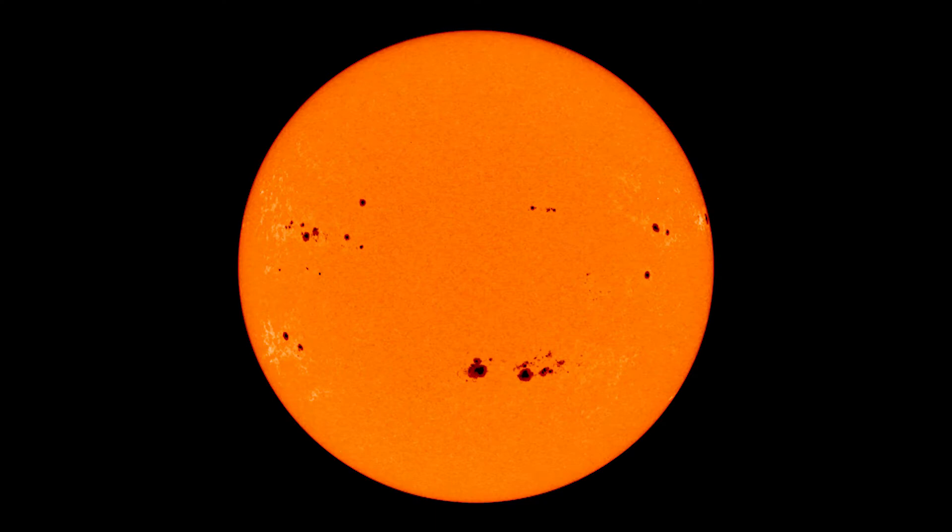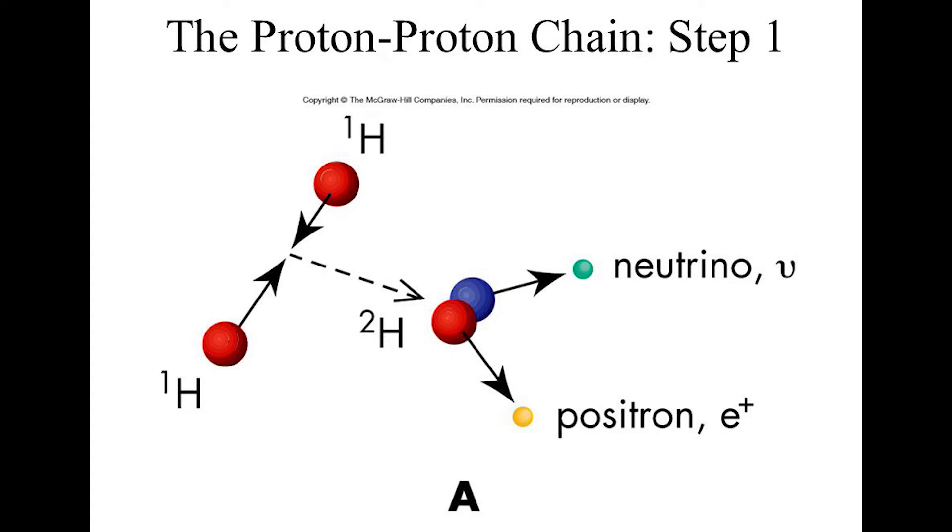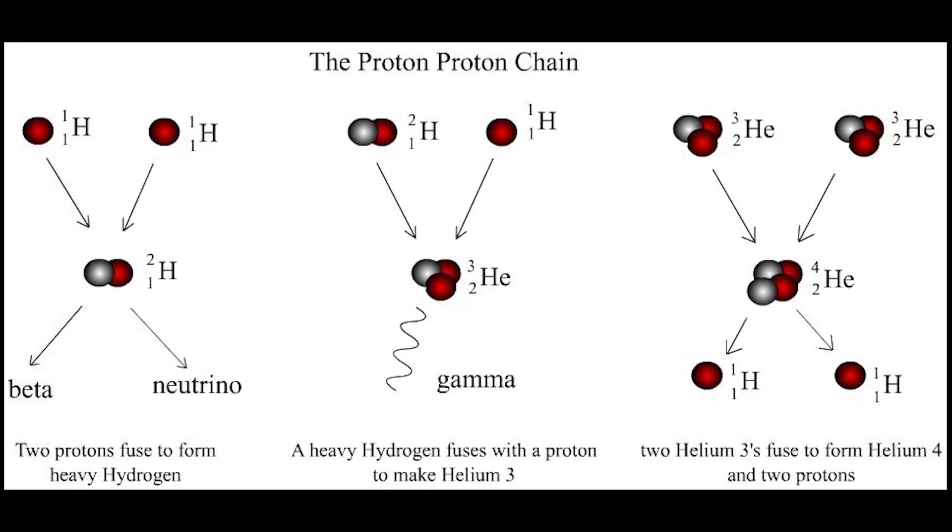Then the contraction ceases and the star turns on and becomes a main sequence star powered by hydrogen fusion. For a star the size of our sun and smaller, the nuclear fusion proceeds via proton-proton chain, where two hydrogen atoms are first merged together into a deuterium atom, which can then be merged with another hydrogen atom to form helium-3. Then two of the helium-3 nuclei can be merged together to form a helium-4 atom.